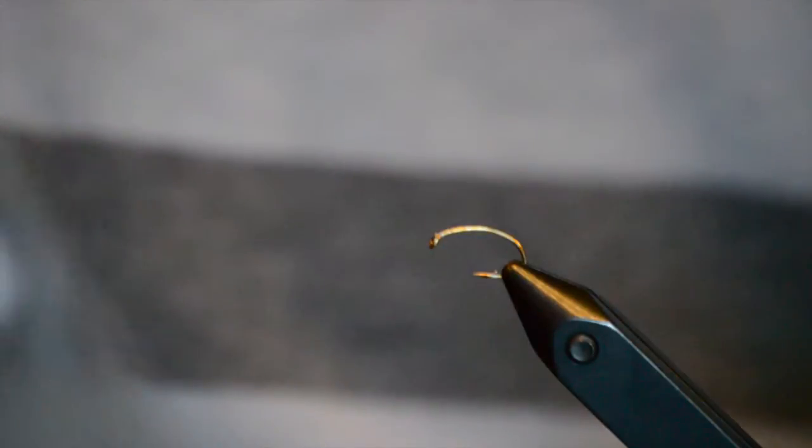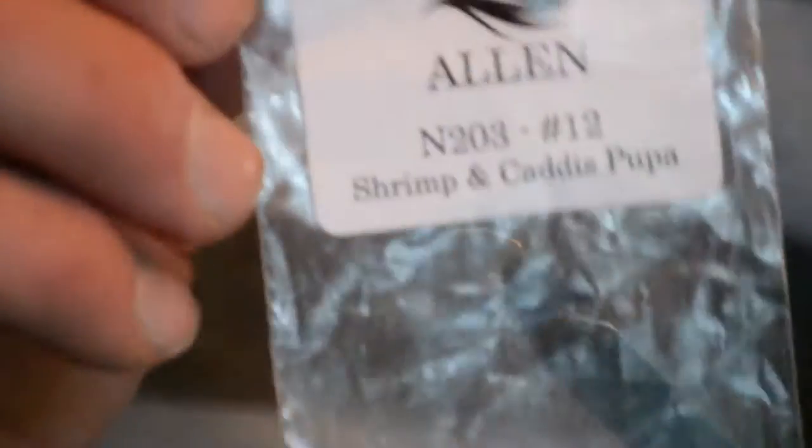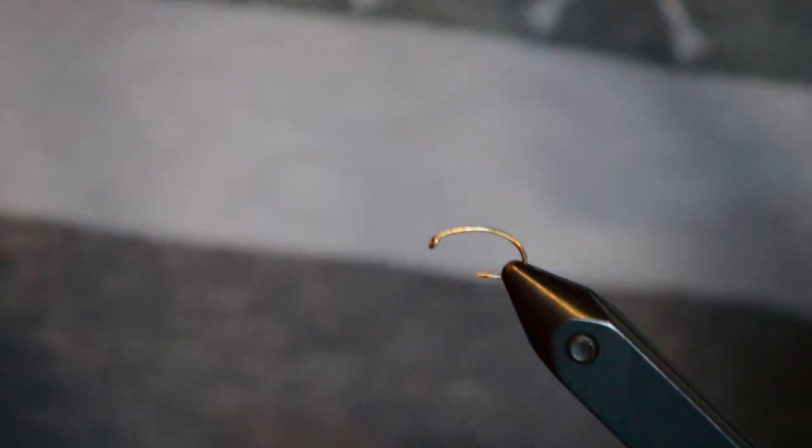First off, we'll talk about the recipe. The hook that we're going to use is an Allen N203 No. 12 Shrimp and Caddis Pupa Hook. You can substitute any other brand. We just chose to use Allen Hooks. They're a great supporter of FinSpots.